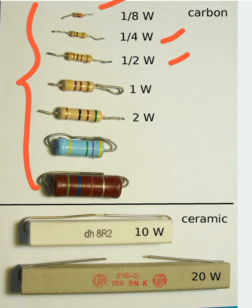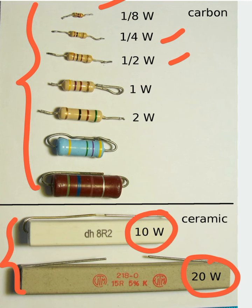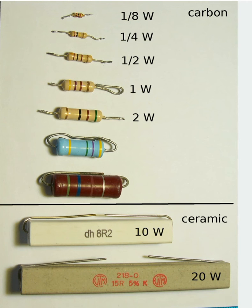All these resistors are called carbon type resistors. These kinds of resistors are called ceramic resistors and their power rating is defined as 10 watt, 20 watt as indicated. So what is the meaning of the power rating?